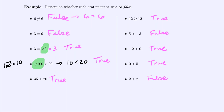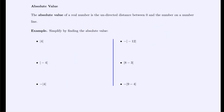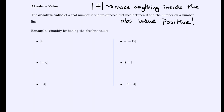Some notation to be aware of: absolute value. We write it as vertical bars around a number, and it simply means make anything inside positive. If it's already positive, leave it alone; if it's negative, turn it positive. So the absolute value of 4 is just 4, but the absolute value of negative 4 becomes positive 4.